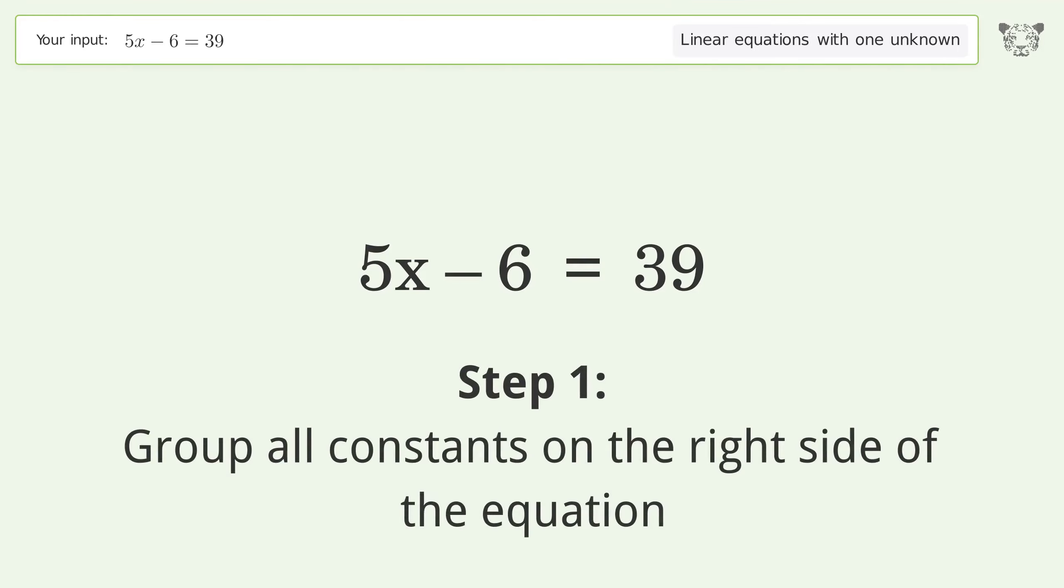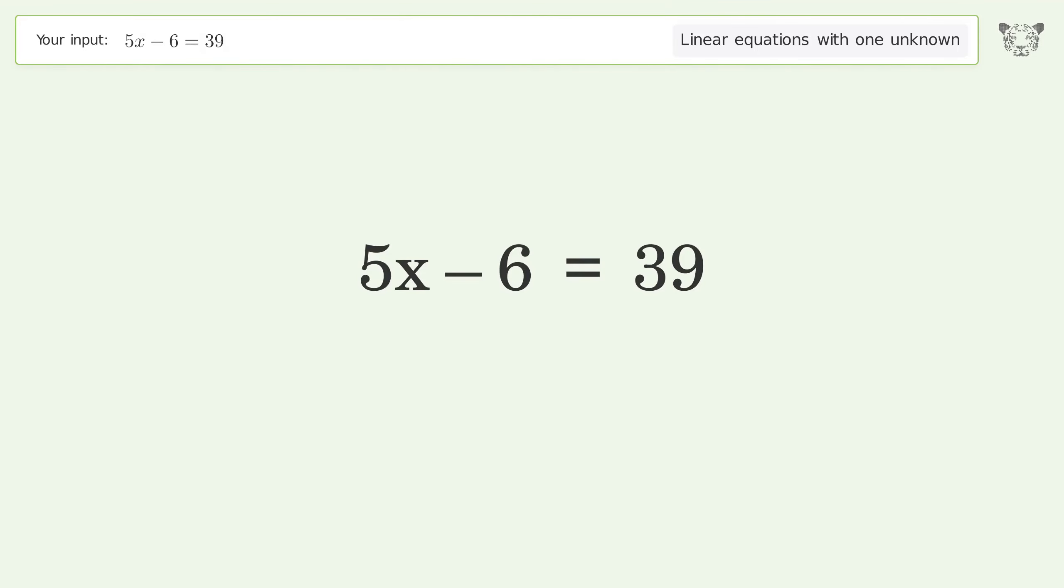Group all constants on the right side of the equation. Add 6 to both sides. Simplify the arithmetic.